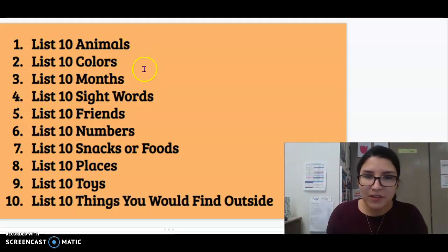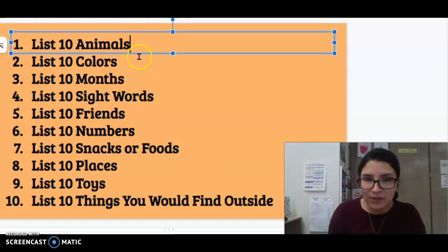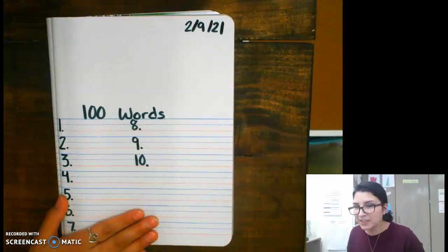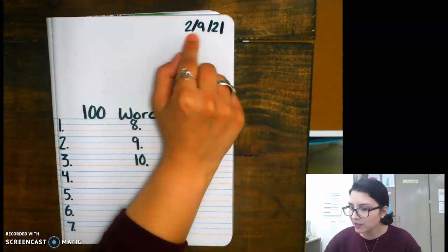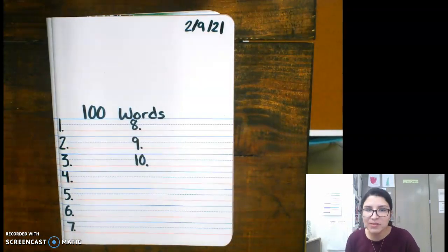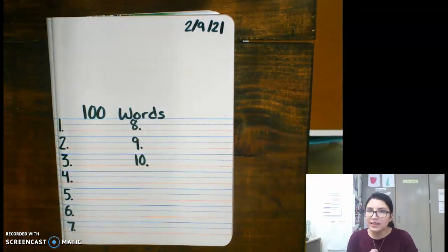So right here, I list a couple different categories for you. List 10 animals. So what you do is, let me show you. Okay, so what you do is get your journal out, and you write the title, 100 words, 2-9-21, and then you start writing words. So our first one was list 10 animals.